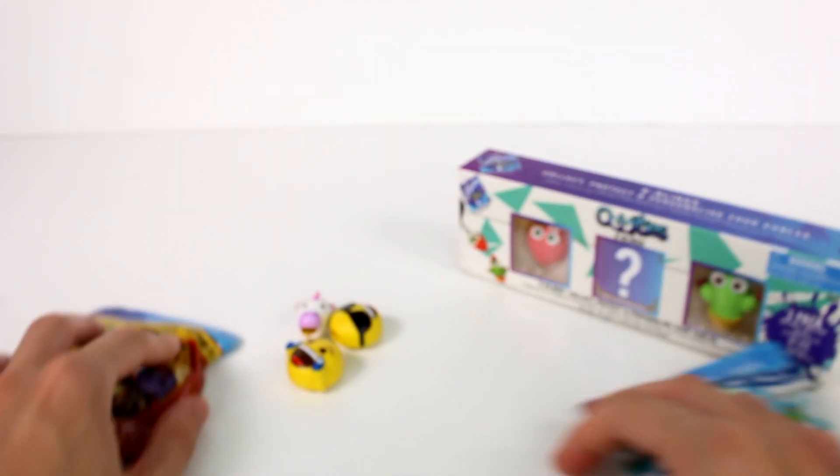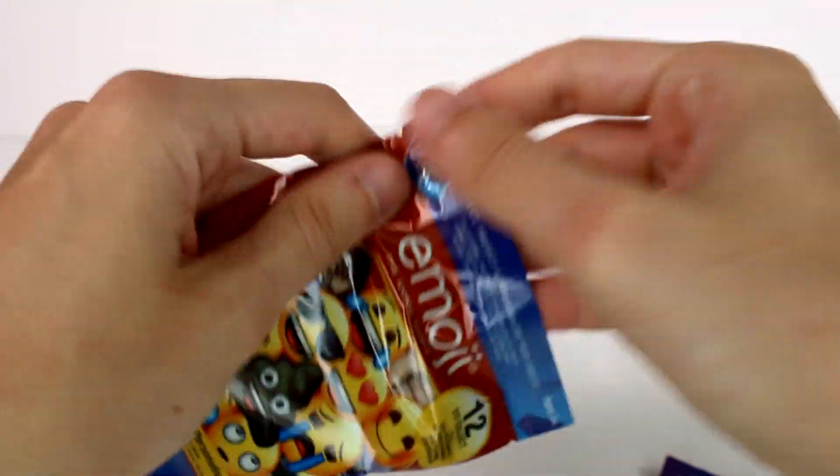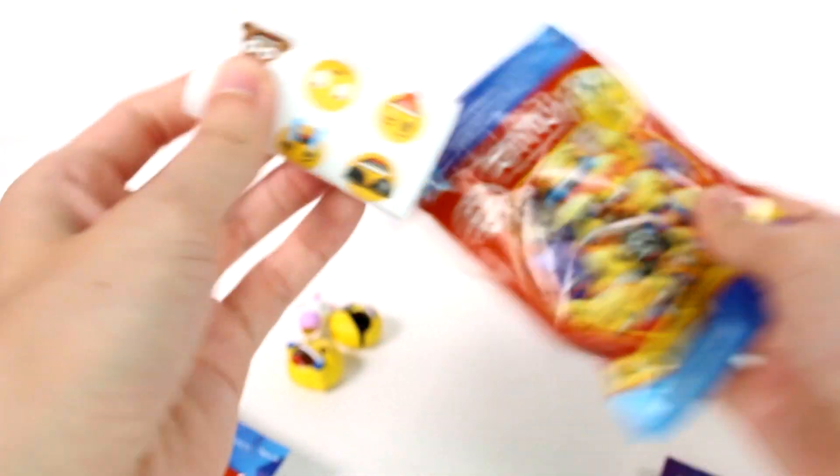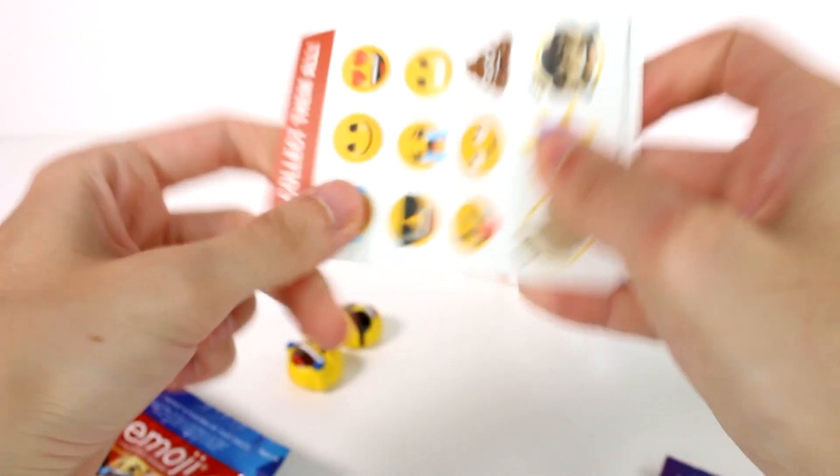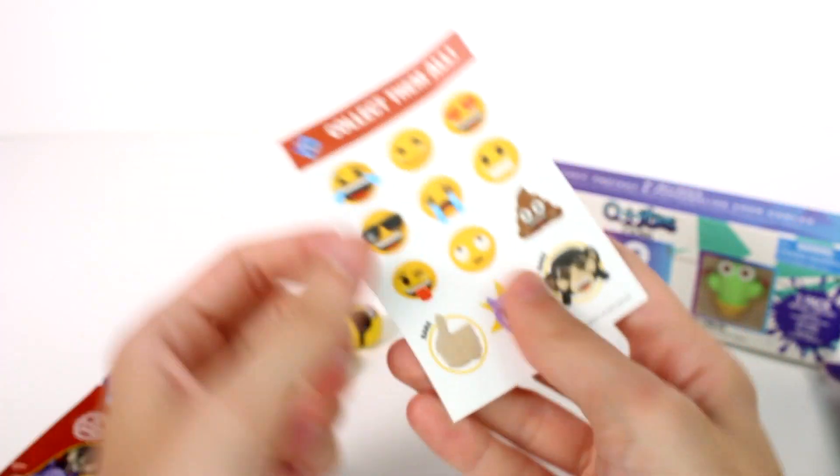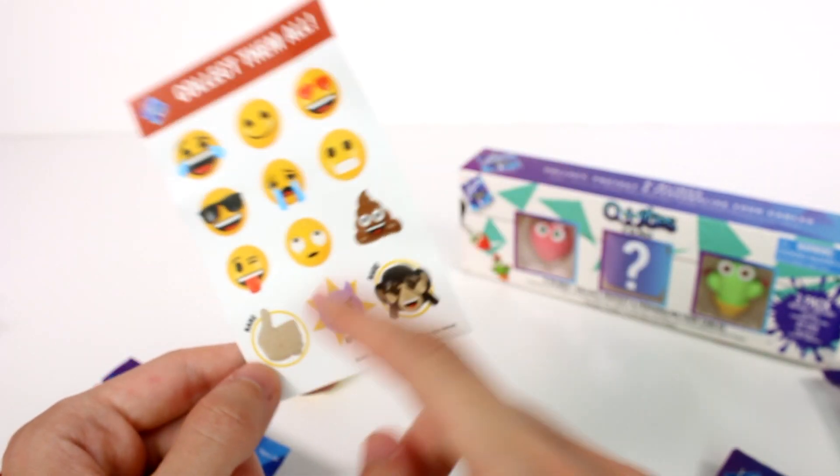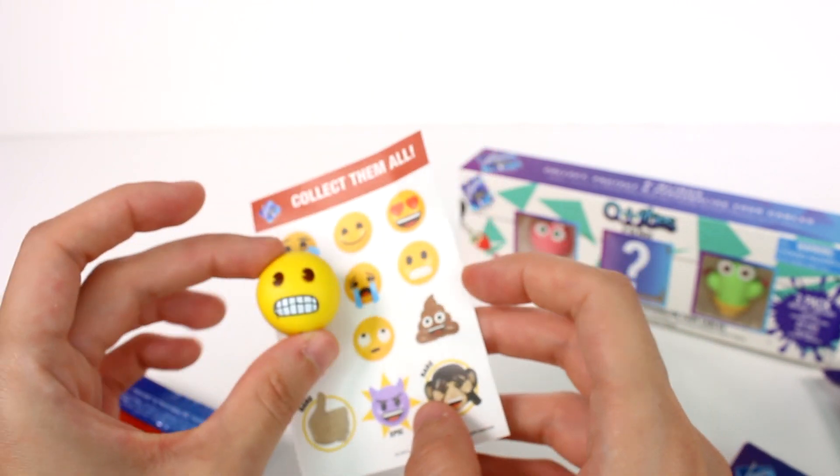Let's go ahead and open up the blind bags. There are 12 different ones to collect in the emoji series. Let's see what we have here. This is the checklist, by the way. I really like how we got a checklist in here. We didn't get one in the three pack, which I find interesting. This is a rare, this is a rare, this is an epic. That's really cool.